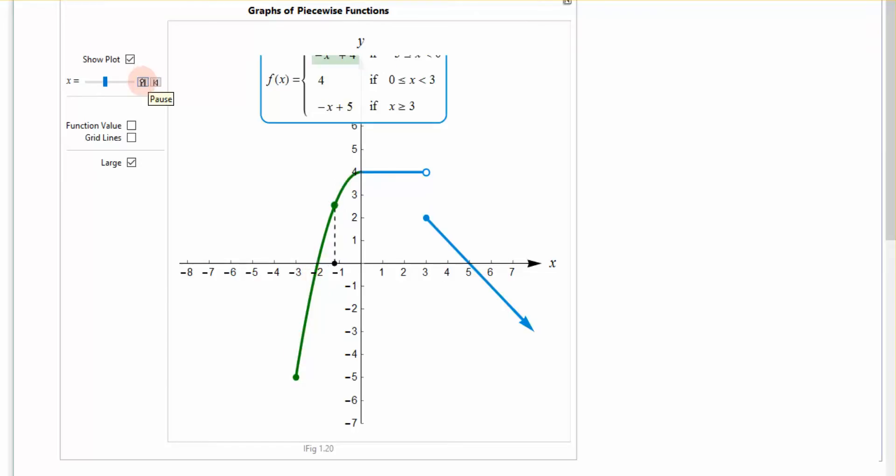We can move along, and we can see that now we're going to jump to the next section of my piece. Where when x is between 0 and 3, I am sliding along this horizontal line at 4. And you can kind of guess probably where I'm going to go next.